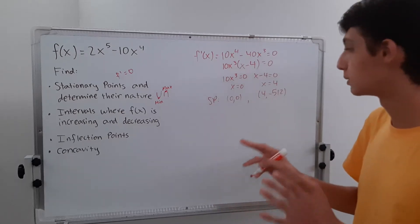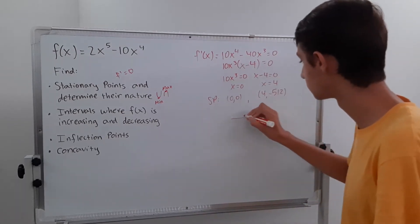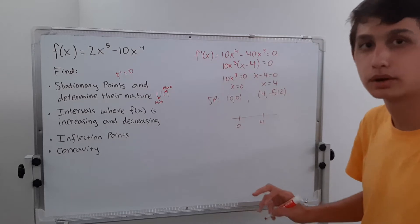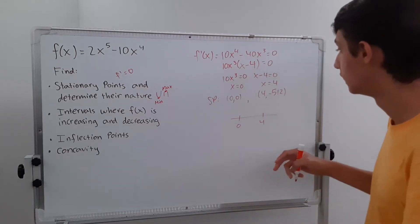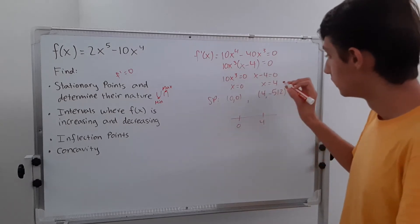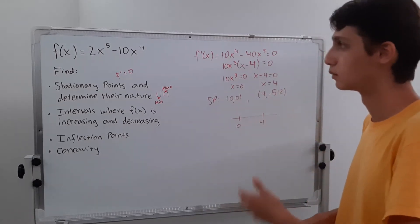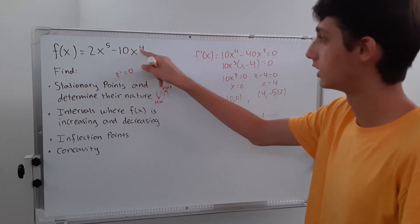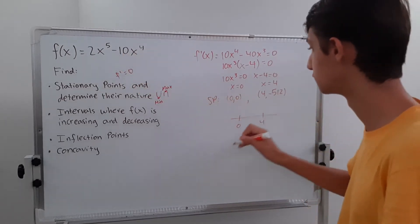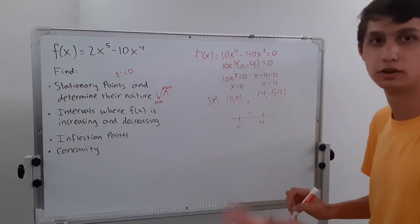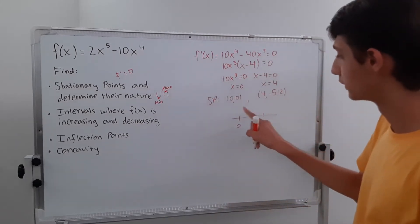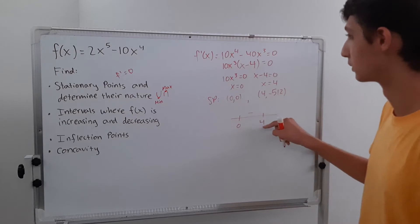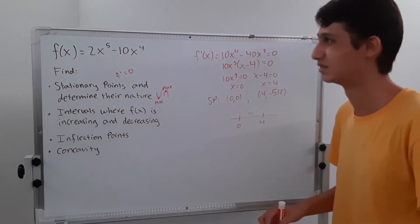The easiest way to determine nature is by plugging in points, or you can use a sign chart. In the sign chart you have your x values — zero and four. You might have one, two, or three or more values depending on the problem. A good choice is to plug in x equals one: two times one to the fifth is just two, minus ten times one to the fourth gives a negative number. You don't need the exact value, just whether it's positive or negative. You can work out the rest using multiplicities, though plugging in x equals five would give huge numbers.